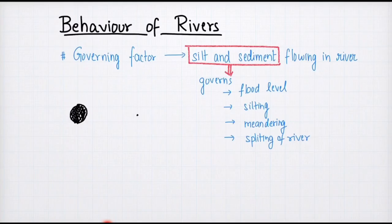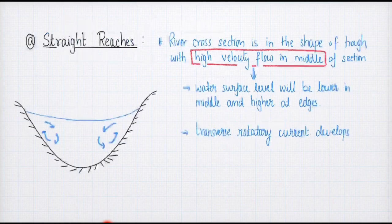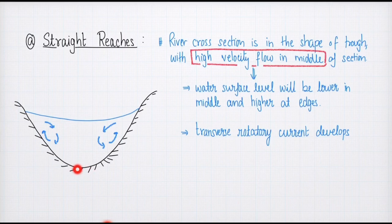Let us discuss a few of the prominent behaviors of the river. The first is straight reaches. In straight reaches, the river cross-section is in the shape of a trough. The water flows at a very high velocity, and because of this high velocity, the central part of the bed slope keeps on getting eroded, resulting in a trough shape.